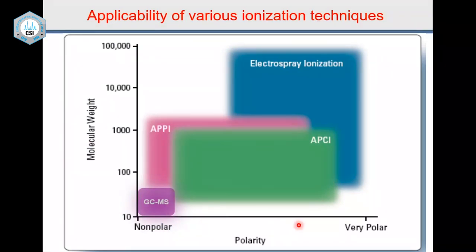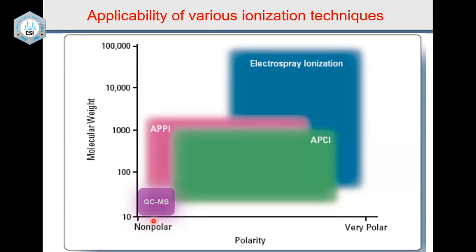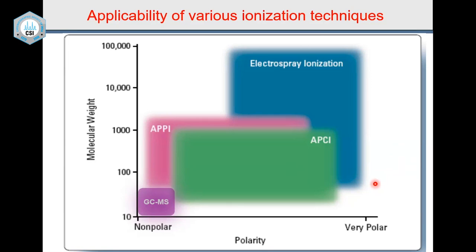If you plot a graph of nonpolar to polar compounds — low polarity, midpolar, and very polar — and from low molecular weight to high molecular weight, you get the complete molecular space of all organic compounds. Low molecular weight and nonpolar compounds form a small percentage but that is hundreds of thousands of compounds, and they are amenable to GC and GC-MS. GC and GC-MS can only be done for low molecular weight volatile compounds that don't decompose in heat.